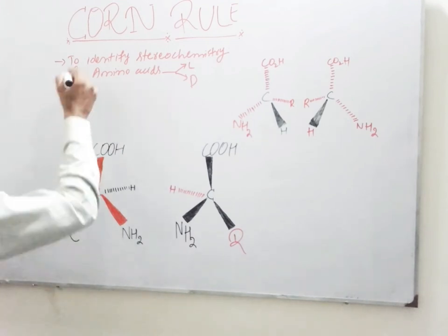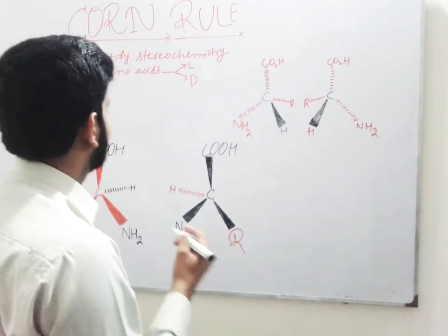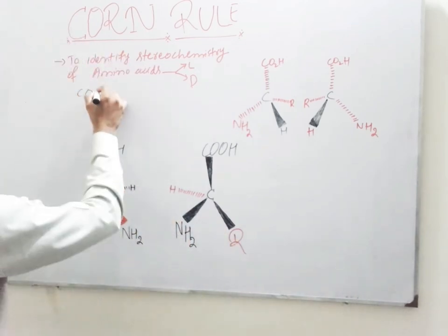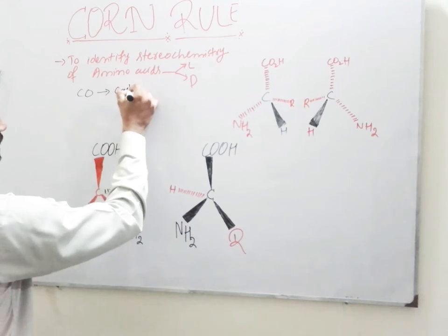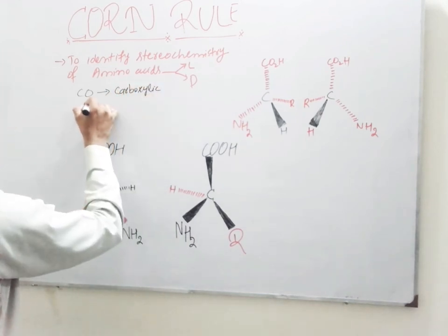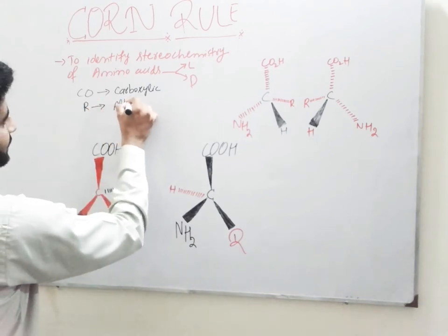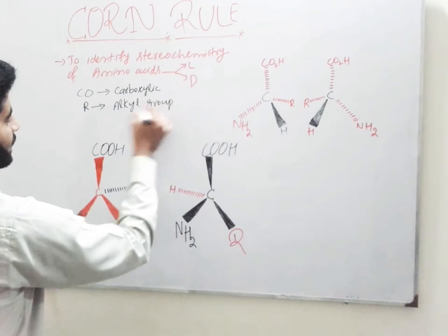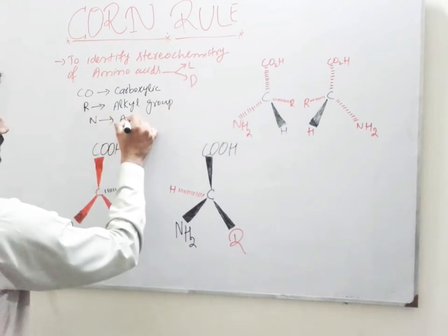In the CON rule, we see the word CON. What is CON? C is the acronym for carboxyl group, R is the acronym for alkyl group, and N is the acronym for amine group.